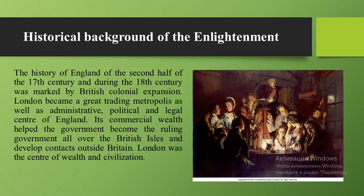The history of England in the second half of the 17th century and during the 18th century was marked by British colonial expansion. London became a great trading metropolis as well as the administrative, political, and legal center of England. Its commercial wealth helped the government become the ruling power all over the British Isles. London was the center of wealth and civilization, and houses were not numbered because the common population couldn't read — pictures were used instead. Poets and literary men attended coffee houses to read their creations.